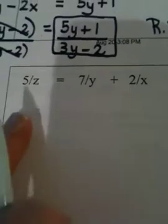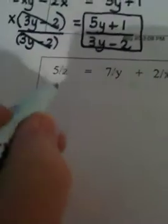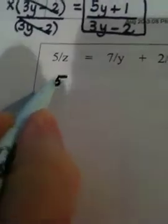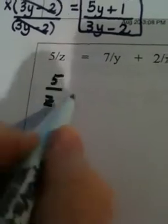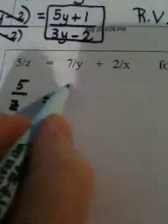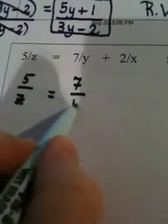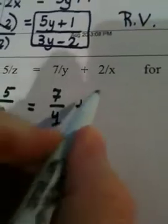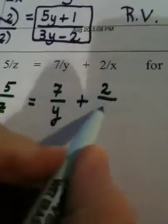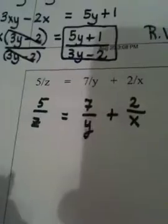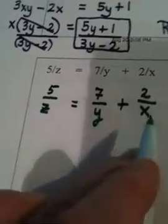Okay ladies and gentlemen, this is the last equation from R5. We have 5/z = 7/y + 2/x. Now my first step is to realize that x, y, and z are in a denominator.